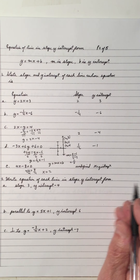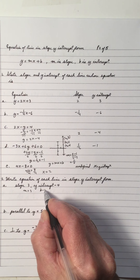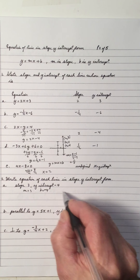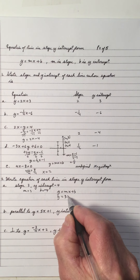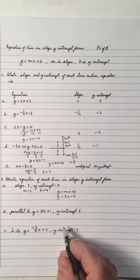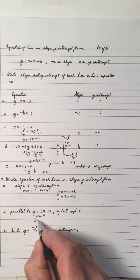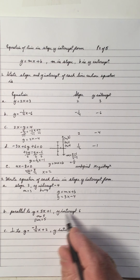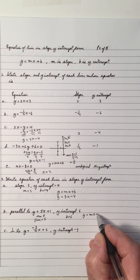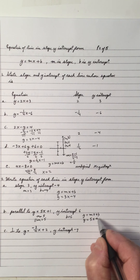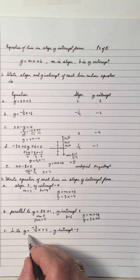Write the equation of each line in slope y-intercept form. You can pause the video and work these out first. If the slope m is 3 and the y-intercept is negative 4, then y equals 3x minus 4. For a line parallel to y equals 5x plus something, the parallel slope is also 5, because parallel lines have the same slope. With b equal to 6, the equation is y equals 5x plus 6.